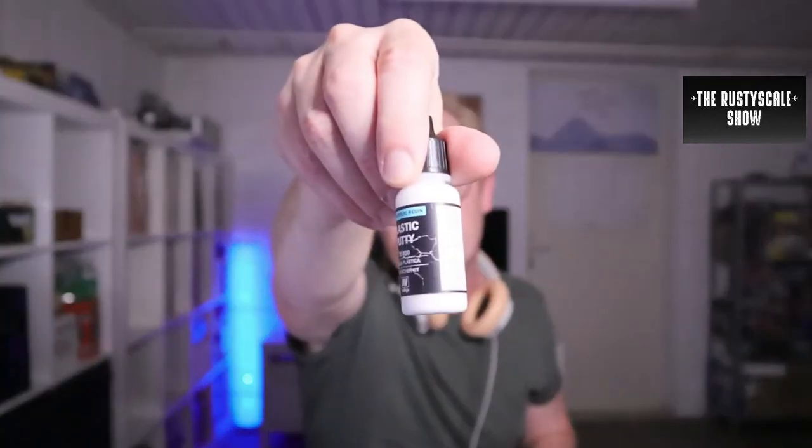Now it's time to prepare the finished assembled model for the priming. Preparing it for priming means getting rid of the gaps and sanding away the seam lines. For the gaps I usually use the plastic putty of Vallejo and for the seam lines I use my microfiller trick. I'll show you in the video.